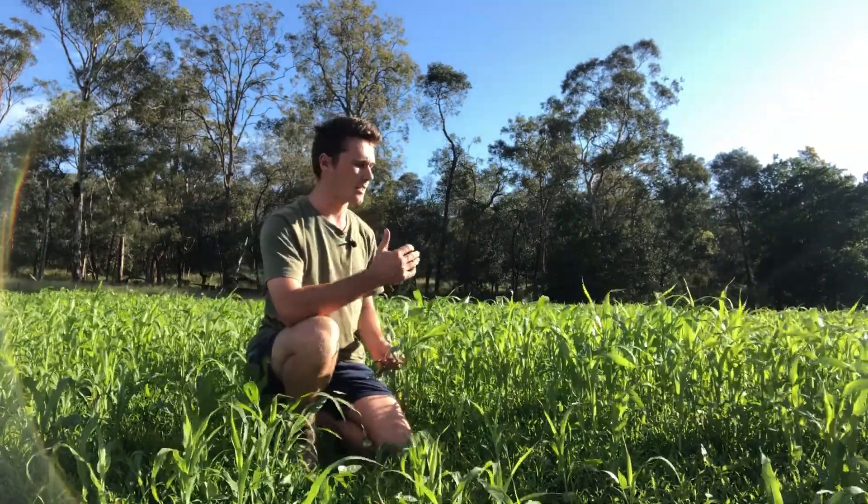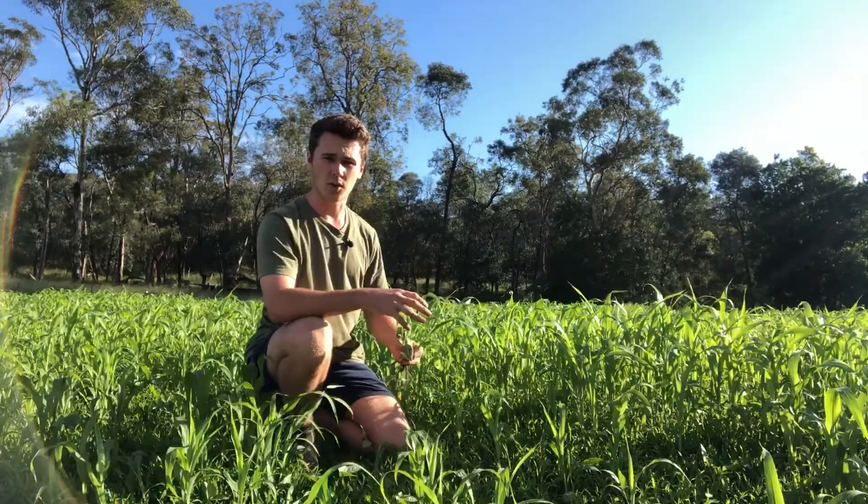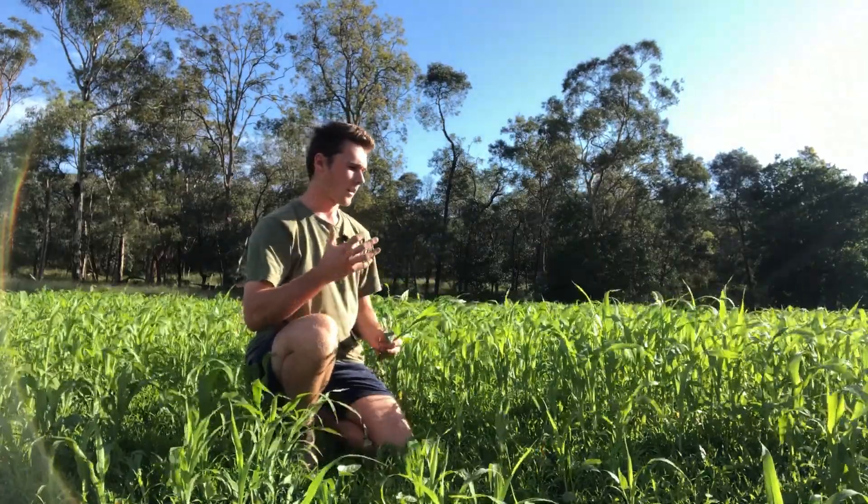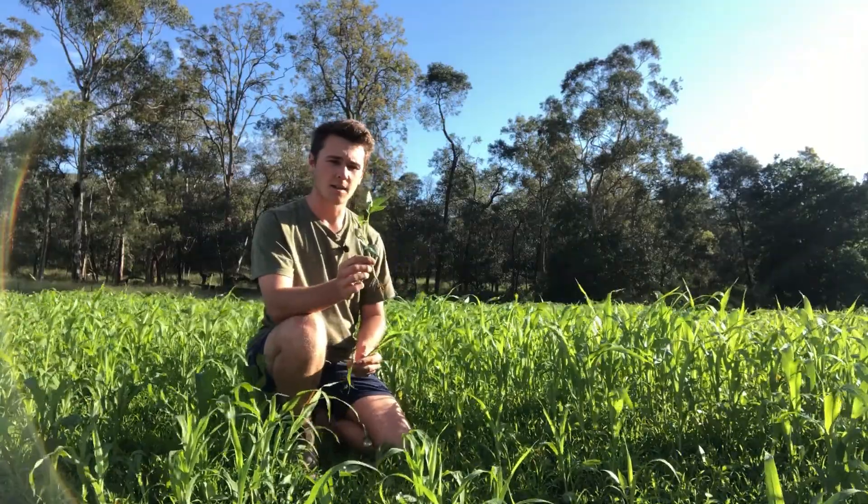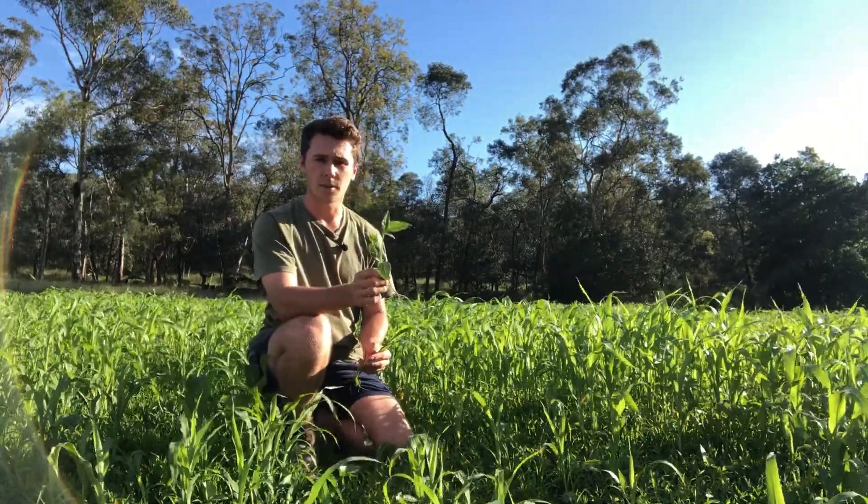Growing here is forage sorghum, which is a really leafy plant with a lot of biomass production, and amongst it is a legume called cowpea.